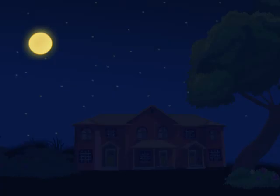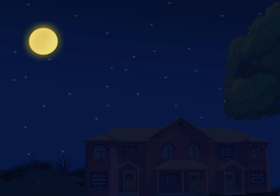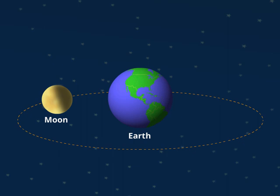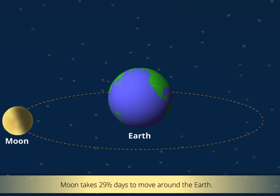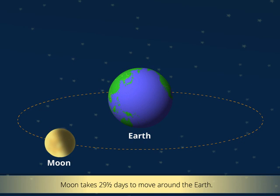Friends, we all love watching the moon at night. The moon is the brightest object in the sky at night. It moves around the earth in a circular path. The moon takes 29 and a half days to move around the earth once and then returns to its original position.